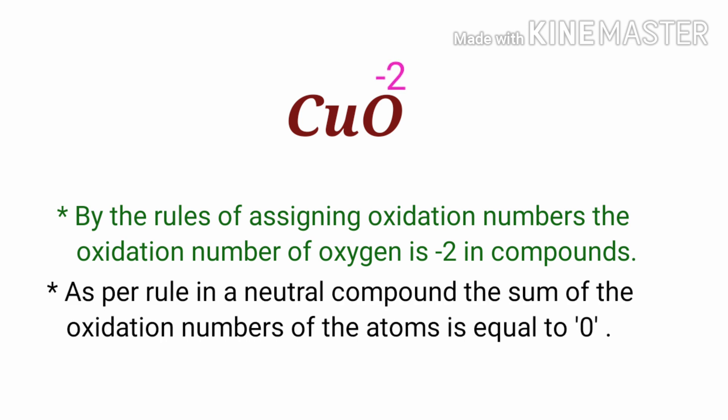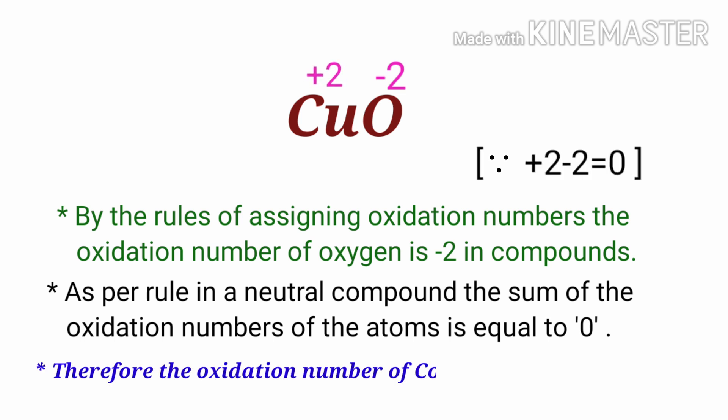As per the rule, in a neutral compound, the sum of the oxidation numbers of atoms is equal to zero. So the oxidation number of copper must be plus two. Therefore, the oxidation number of copper is plus two in cupric oxide.